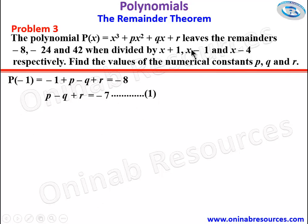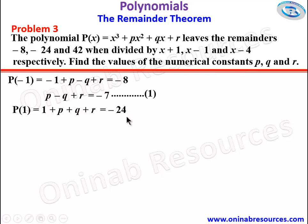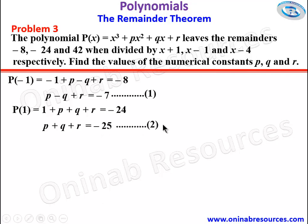Then for the second divisor, we find p of 1, since x minus 1 equals 0 gives x equals 1. Substituting: 1 plus p plus q plus r equals negative 24. Simplifying, p plus q plus r equals negative 25, since negative 24 minus 1 gives negative 25. We call this equation 2.